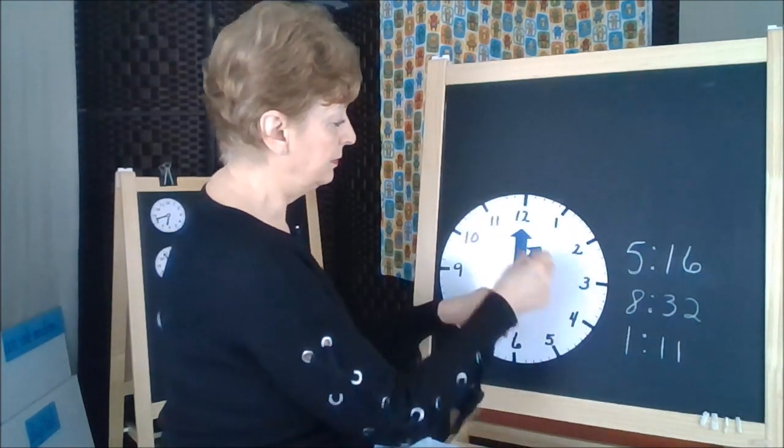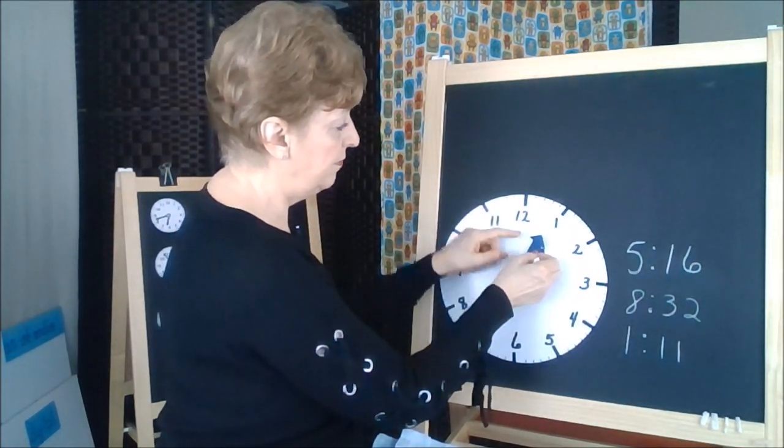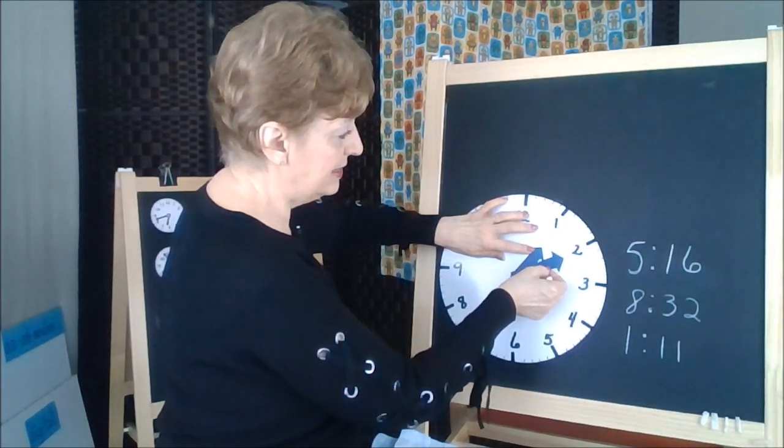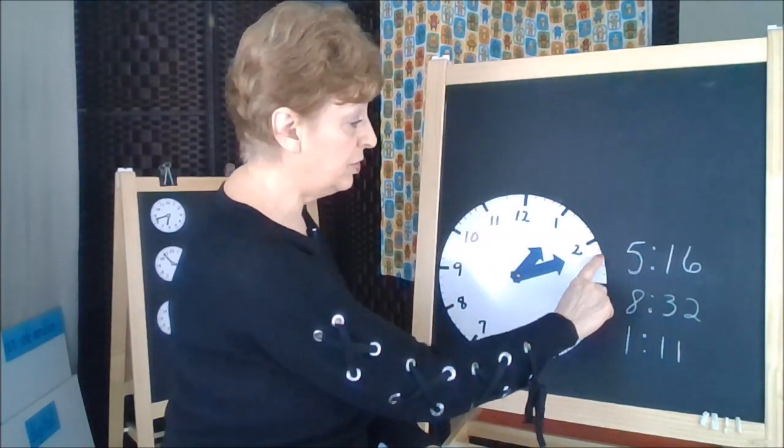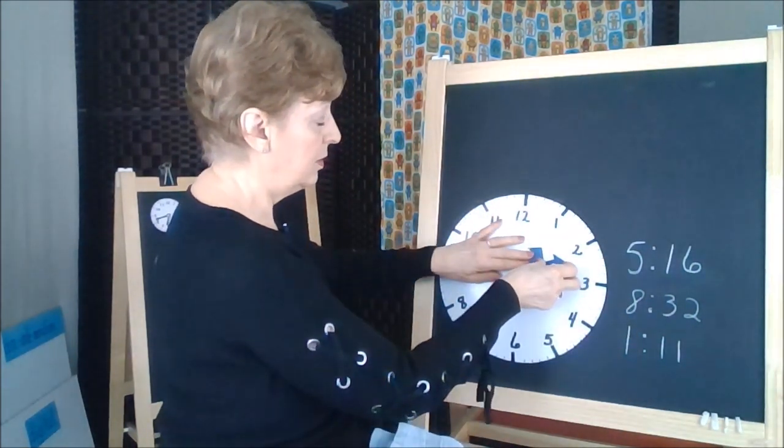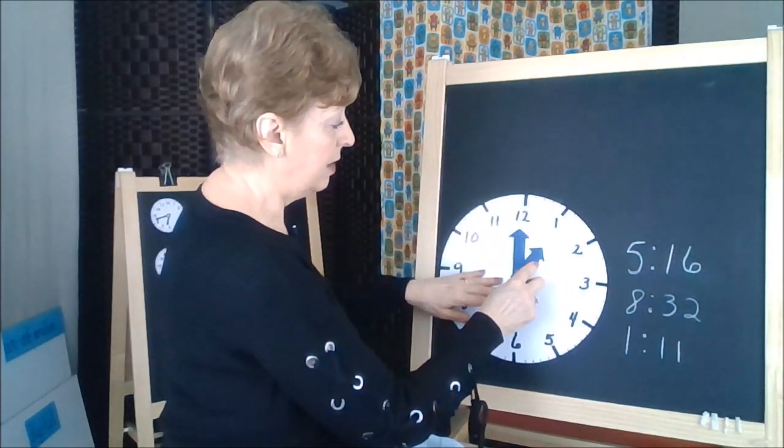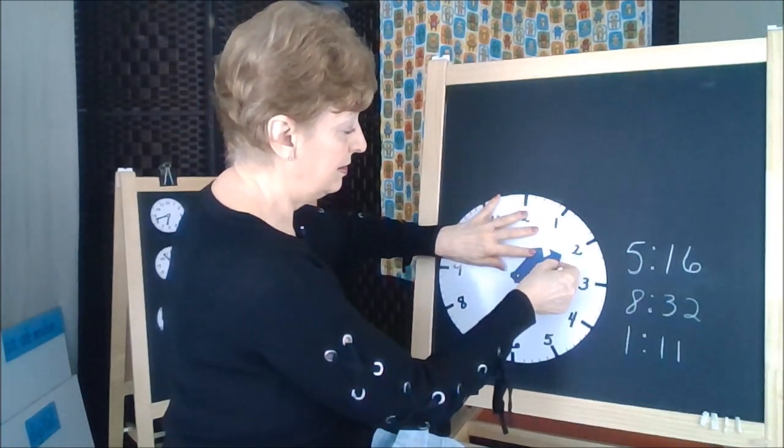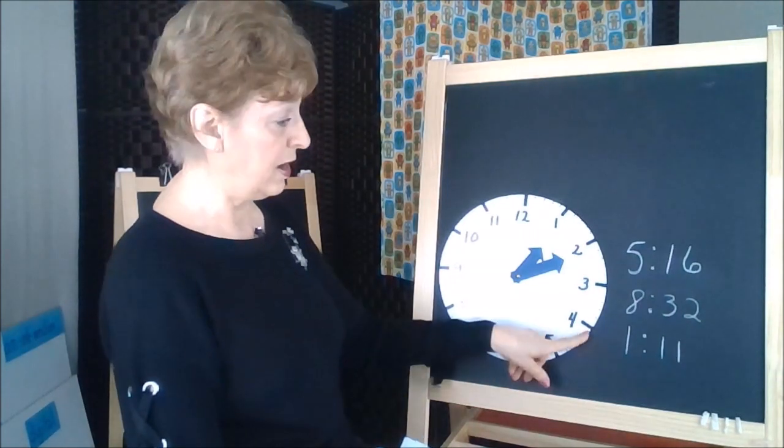Now we need 11. 1, 2, 3, 4, 5, 6, 7, 8, 9, 10, 11, right there. Or you could shortcut this. We go back to our 1 o'clock and count by 5s: 5, 10, 11. That would be 1:11.